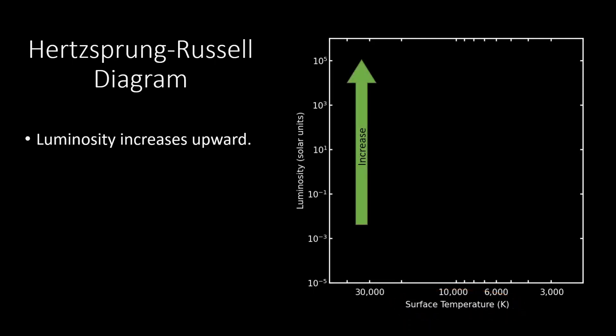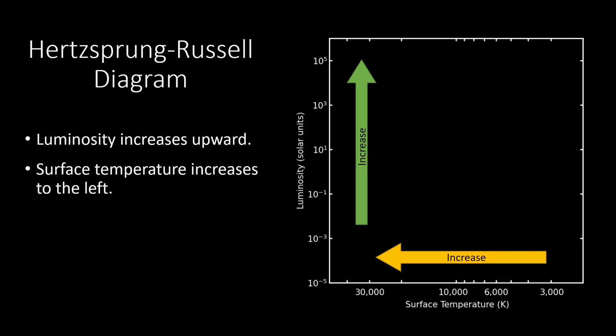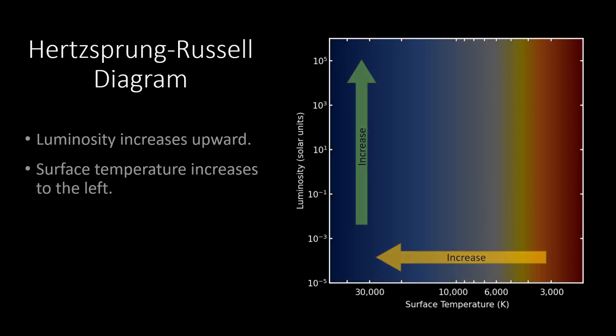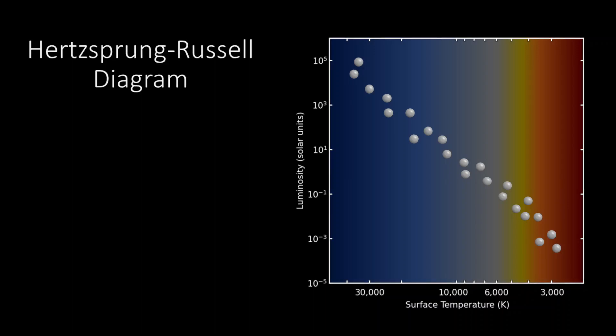Luminosity increases upwards while temperature increases to the left. When the luminosity and surface temperature of many stars in the solar neighborhood are plotted on an HR diagram, most stars are aligned along a diagonal band running from highly luminous hot stars on the top right toward cool, less luminous stars on the bottom left. This band is called the main sequence.